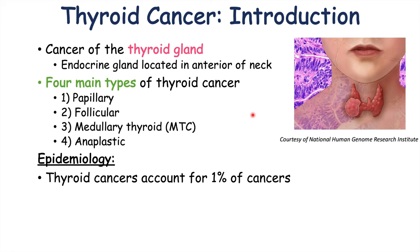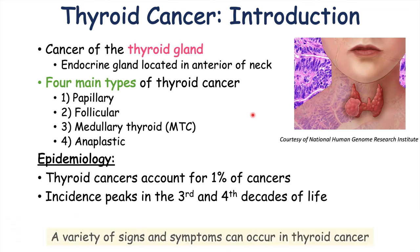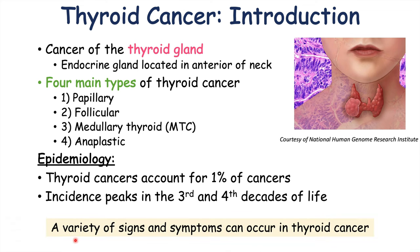Thyroid cancers account for approximately one percent of all cancers. Certain types occur at different times of a person's life, but on average the incidence of thyroid cancer peaks in the third to fourth decade of life. There is a variety of signs and symptoms that can occur in thyroid cancer, which we're going to talk about in the next upcoming slides.